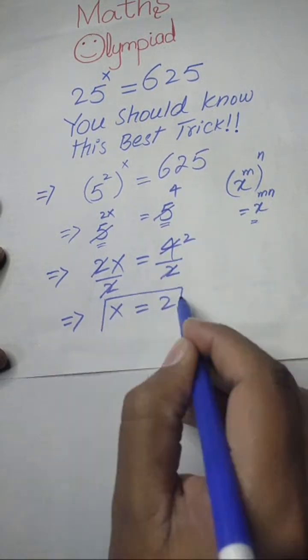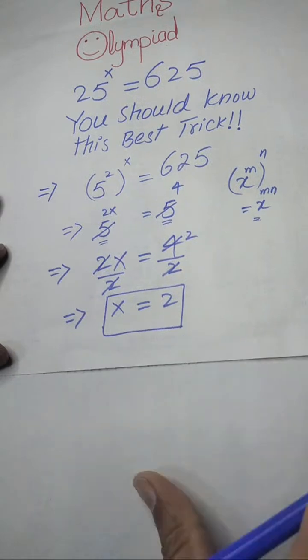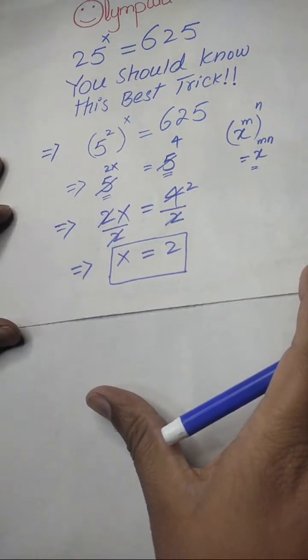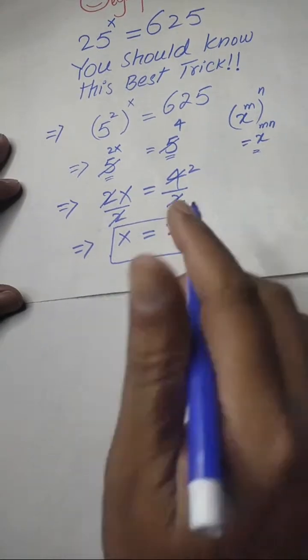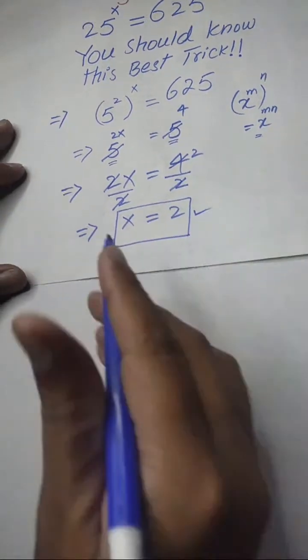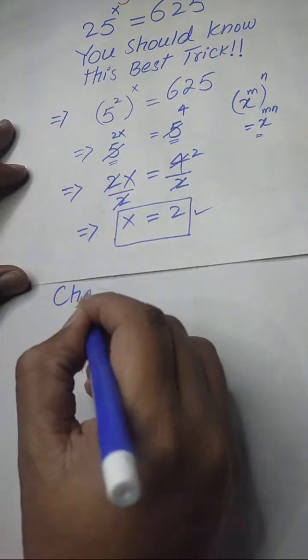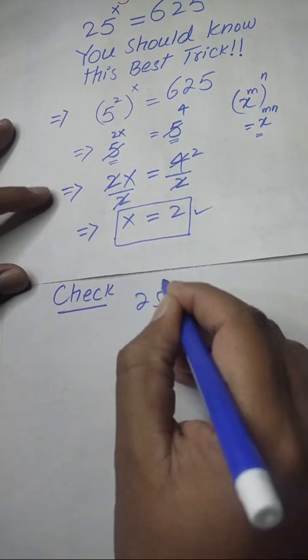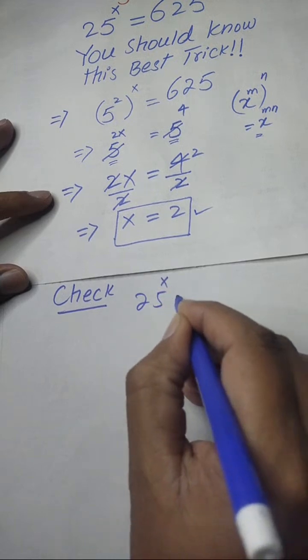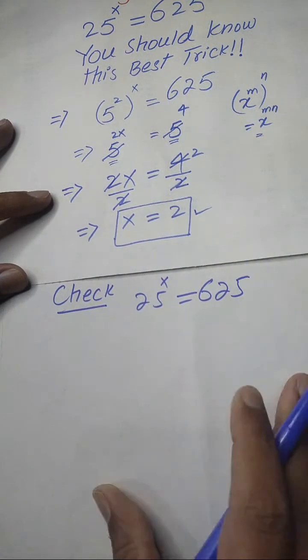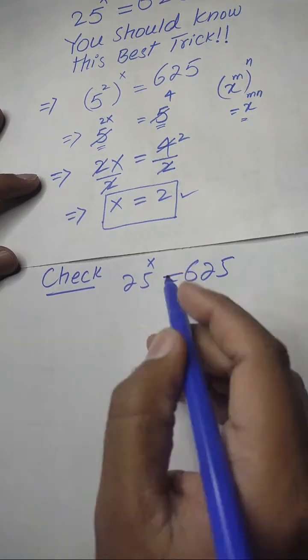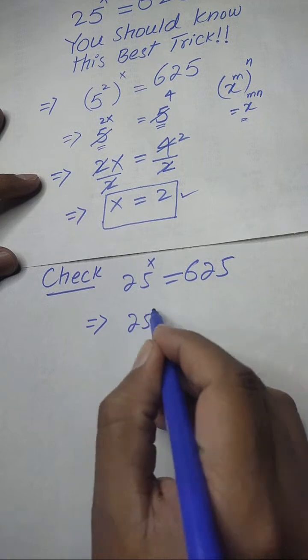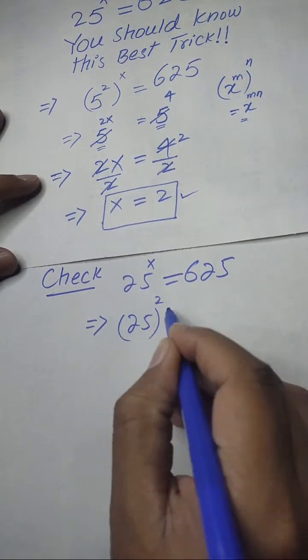After that, we will check our solution or answer. In order to check this answer, our question statement is 25 to the power of x equals 625. So here we substitute x equals 2, and we will obtain 25 to the power of 2 equals 625.